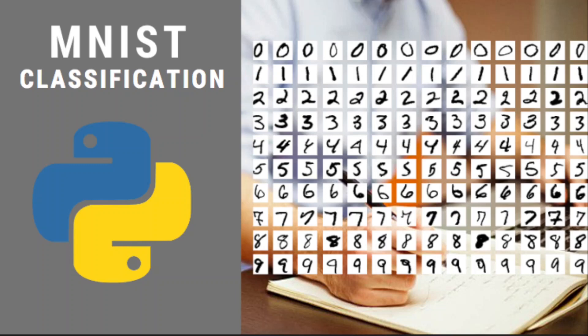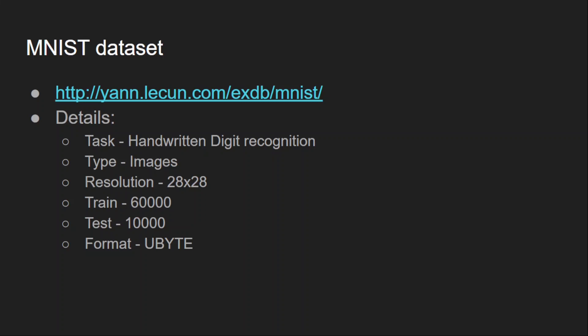First let's see what is an MNIST dataset. MNIST dataset is actually a multi-class classification dataset. The type of the data is images and each image is of the resolution 28 by 28. The total training images are 60k and test images are 10k. It is actually handwritten digit recognition — digits from 0 to 9 — and each image will have one number between 0 and 9 and we have to identify which number it is. The dataset is available in ubyte format, which we can convert into images or a string depending on how we are using it.